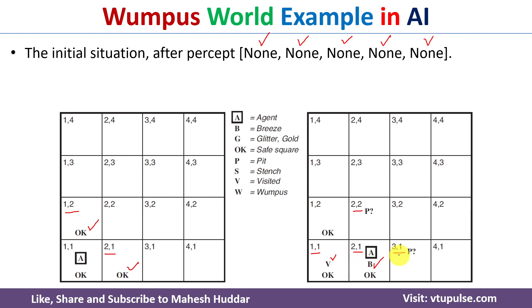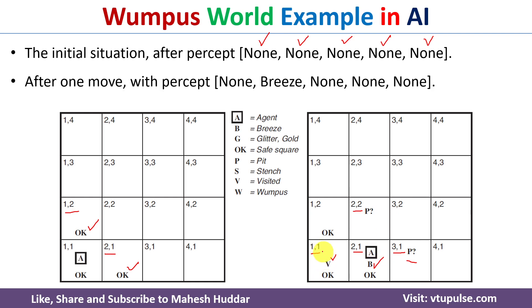I am not saying there is definitely a pit — there is a possibility of a pit. The agent cannot go from (2,1) to (3,1) because of the pit risk, and it cannot go towards (2,2) either for the same reason. So the only option is to go back to the initial state, that is (1,1).